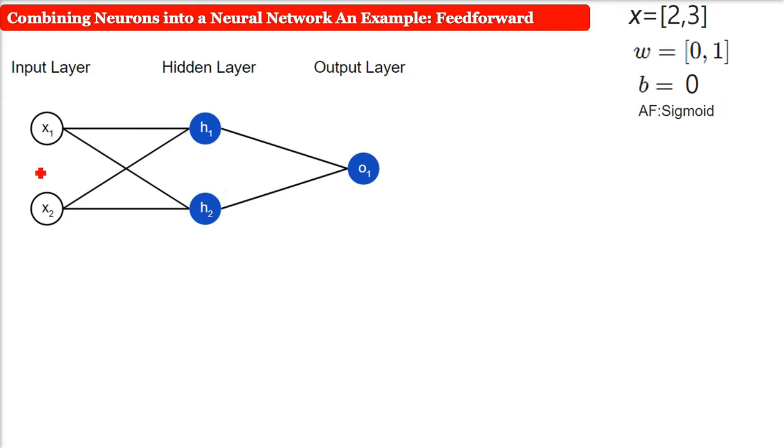A neural network is nothing more than a bunch of neurons connected together as you see here. This network has two inputs, a hidden layer with two neurons H1 and H2, and an output layer with one neuron O1. Notice that the inputs to O1 are the outputs from H1 and H2. That's what makes this a network. A hidden layer is any layer between the input and output, and there can be multiple hidden layers.